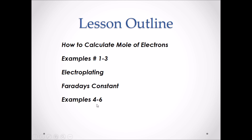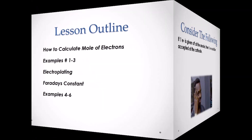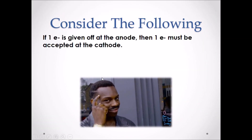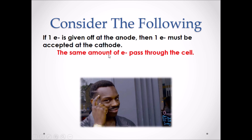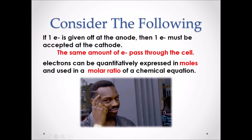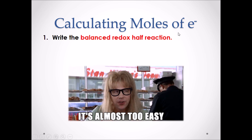Consider the following: if one electron is given off at the anode, then that same electron must be accepted at the cathode. The same amount of electrons will pass through the cell, meaning no electrons can ever escape. Electrons can be quantitatively expressed in moles and used in a molar ratio of a chemical equation.